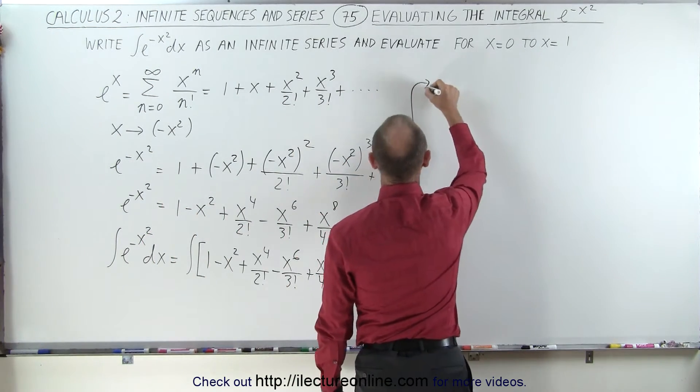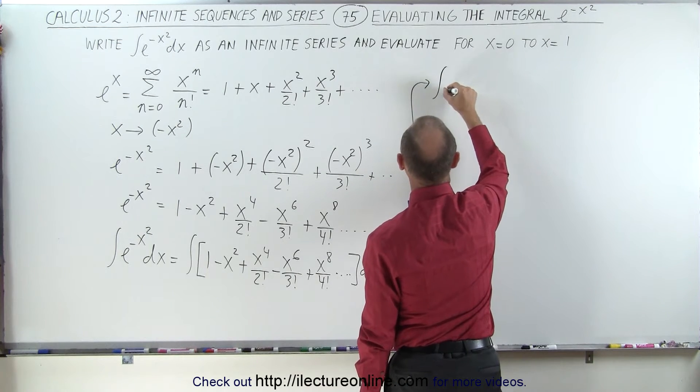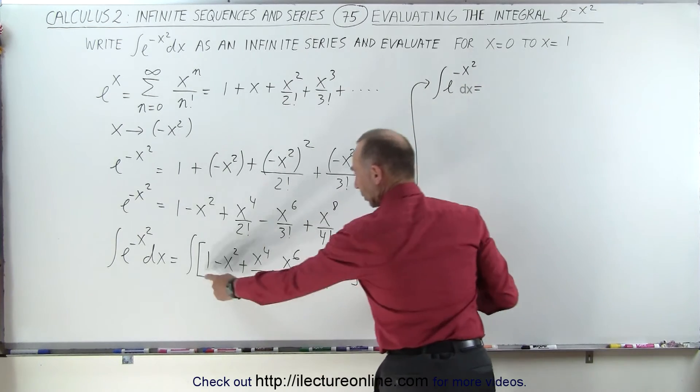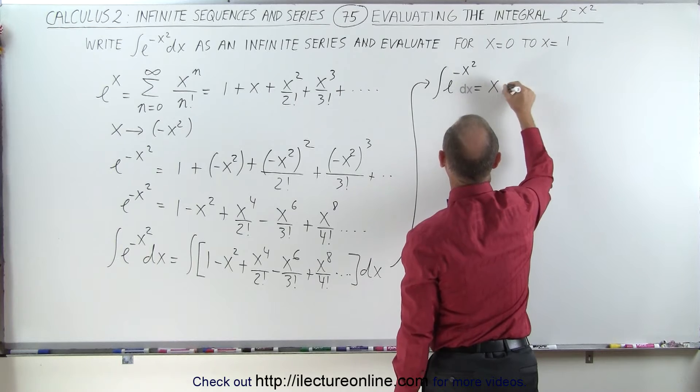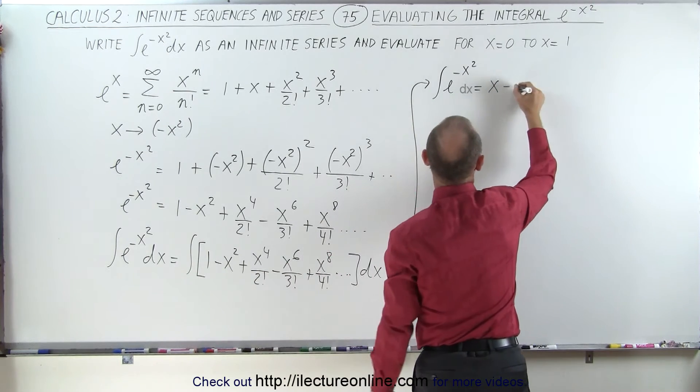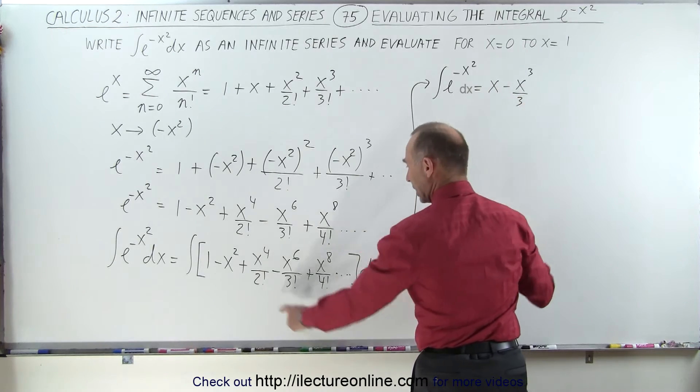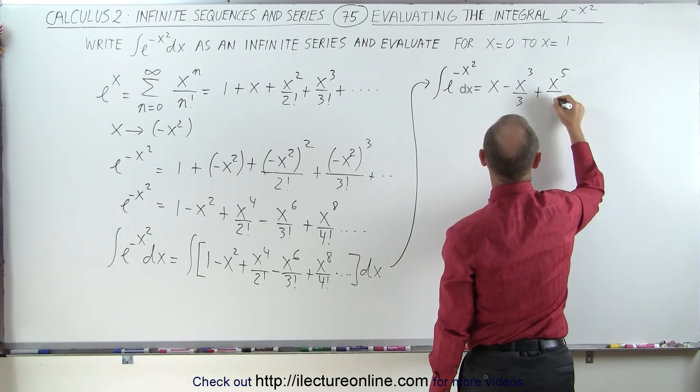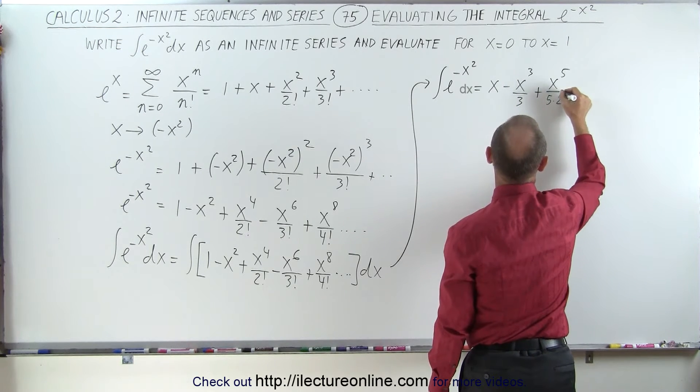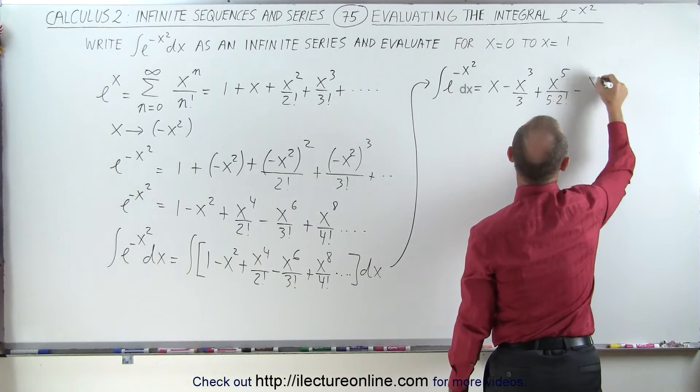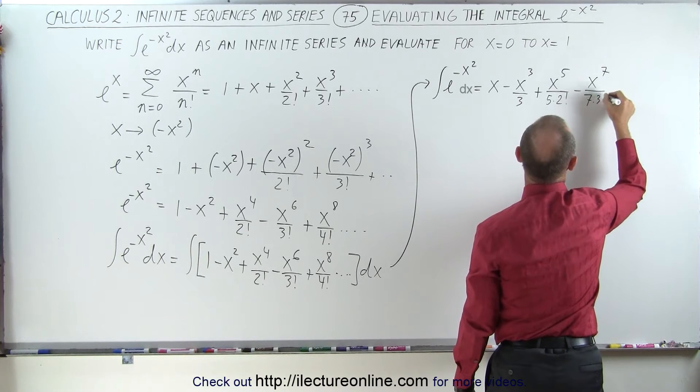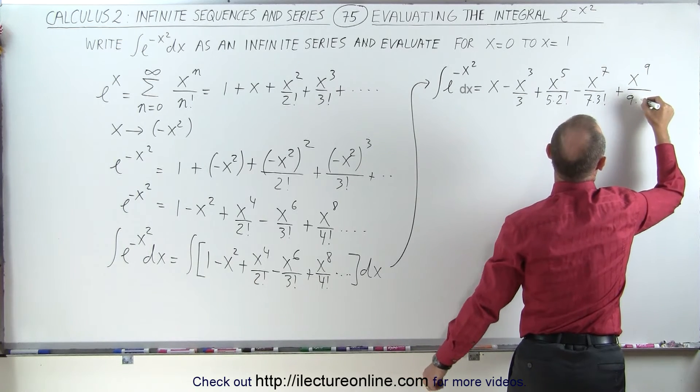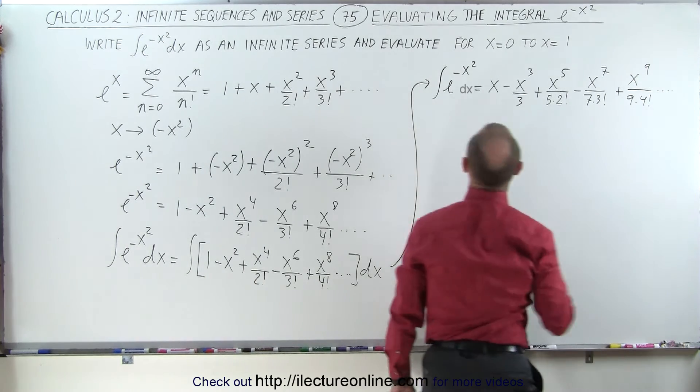So, coming over here, we can now say that the integral of e to the minus x squared is equal to the integral over here. That means the integral of 1 is x plus or minus, we have minus x cubed over 3, and then here we get plus x to the 5th over 5 times 2 factorial, and then we have minus x to the 7th over 7 times 3 factorial, and then plus x to the 9th over 9 times 4 factorial, and you can see the pattern now.